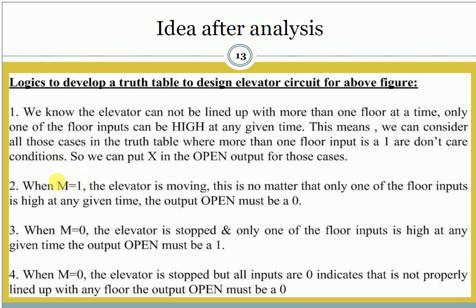In the cases where M equals 1, that represents the elevator is moving. When the elevator is moving, the door will not be opened, so the output should be 0 for M equal to 1. M equal to 0 represents that the elevator is not moving — it is stopped. For M equal to 0, F1 equal to 1, F2 equal to 0, and F3 equal to 0, it indicates that the elevator is stopped on the first floor, so the elevator door can be opened.